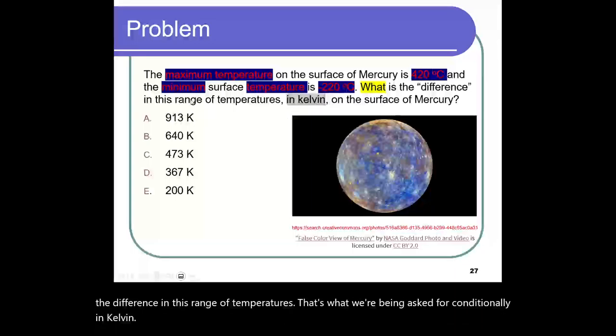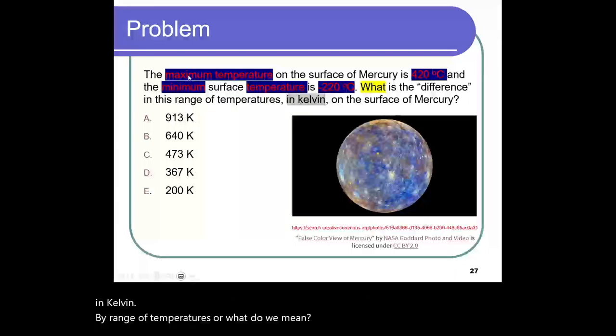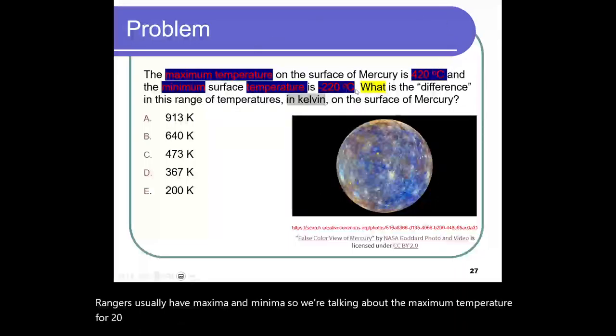Well, by range of temperatures, what do we mean? Well, ranges usually have maxima and minima. So, we're talking about the maximum temperature, 420, minimum temperature, minus 220. So, effectively, it looks like we're saying we need to convert these temperatures to Kelvin and then take the difference.